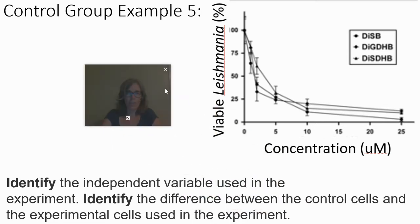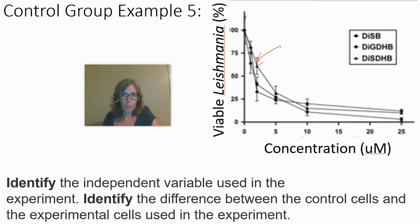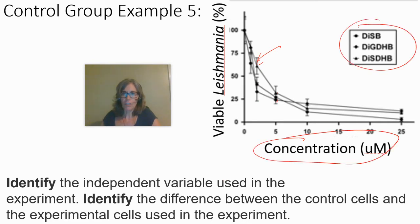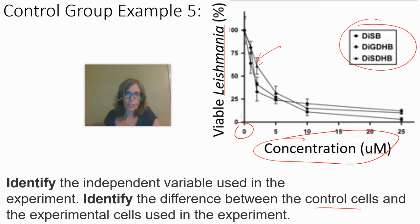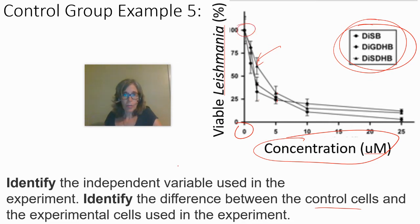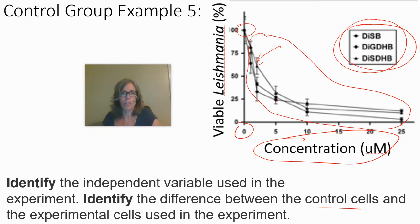They repeat that for each concentration — three more test tubes for each group. The independent variable is the concentration of botulin derivatives. The control cells are those placed in a test tube with zero micromolar — no drug at all — showing 100% viability. The experimental cells are all the others with any concentration of any of these drugs.